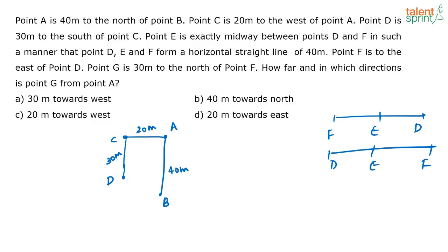Now one more thing they have given is I don't know which is correct, right. I can extend this line to this side or to this side. They have given that point F is to the east of point D. So point F is to the east of point D means point F has to be here. So this has to be point F and this has to be point E.